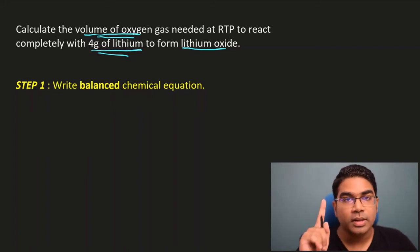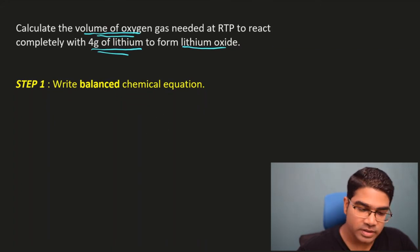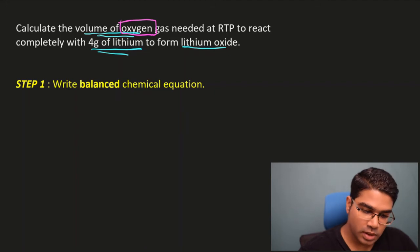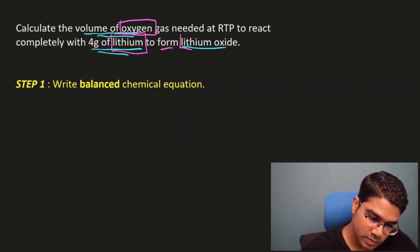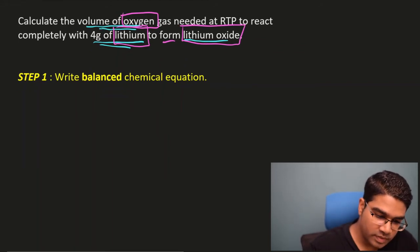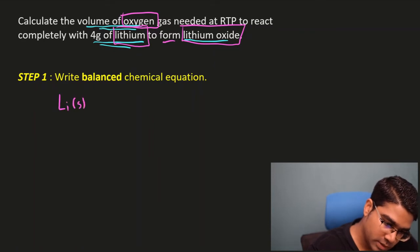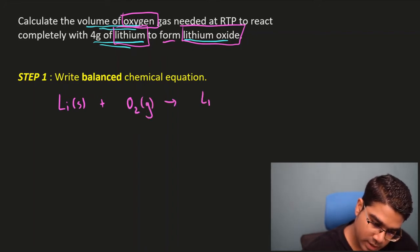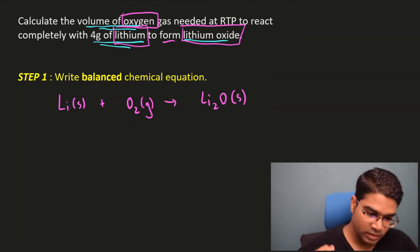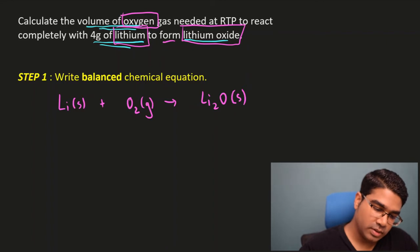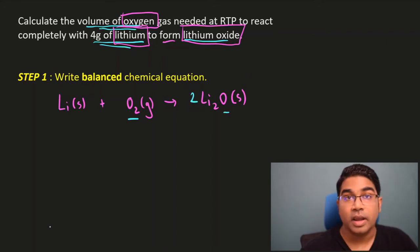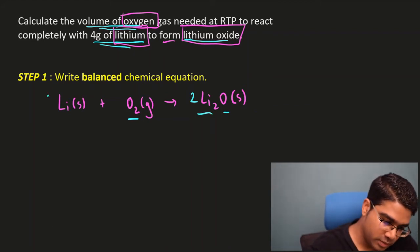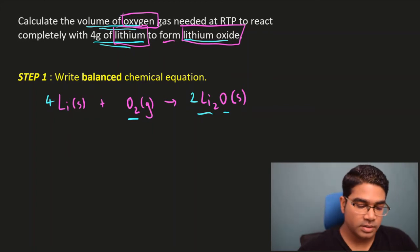Let's start with step 1: write the balanced chemical equation. We have lithium (Li solid) plus oxygen (O₂ gas) forming lithium oxide (Li₂O solid). To balance: oxygen has 2 on the left and 1 on the right, so we put a 2 in front of Li₂O. That gives 4 lithium on the right, so we put 4 in front of Li. The balanced equation is: 4Li + O₂ → 2Li₂O.